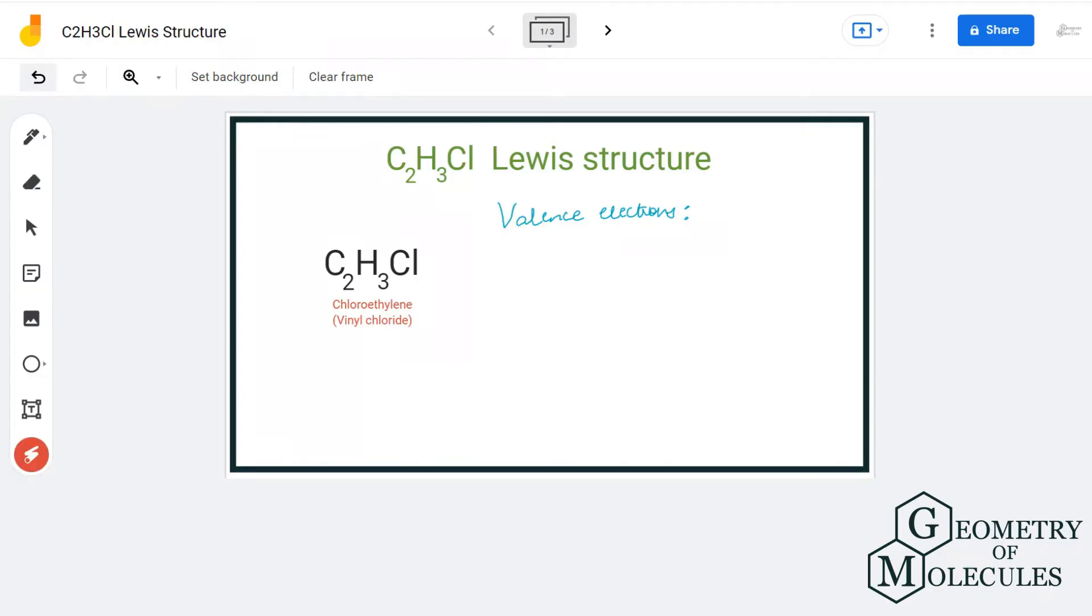Hi guys, welcome back to our channel. In today's video we are going to help you with C2H3Cl Lewis structure. It is a chemical formula for chloroethylene or vinyl chloride, and to determine its Lewis structure we...